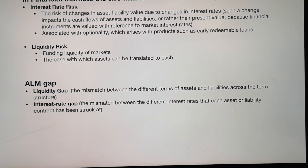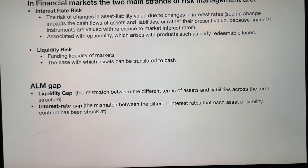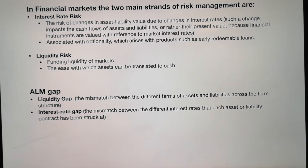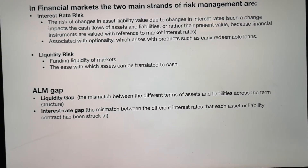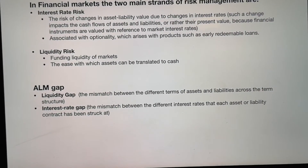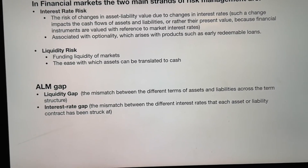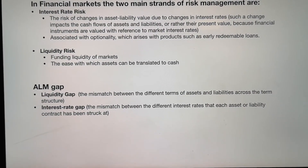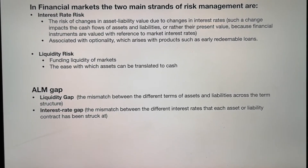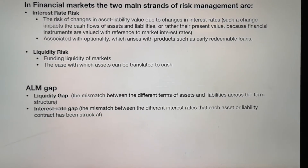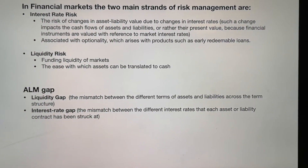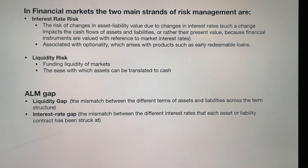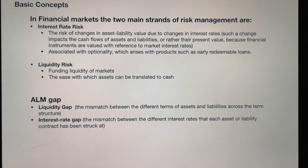For the gaps — sometimes called the asset liability management gap — there are also two sides. One is the liquidity gap, and another is the interest rate gap. The liquidity gap is a mismatch between the different terms of assets and liabilities across the term structure. The interest rate gap is a mismatch between the different interest rates that each asset or liability contract has been struck at.